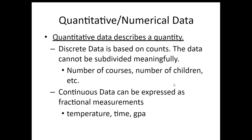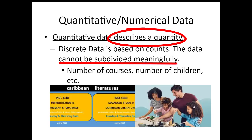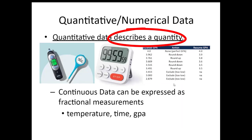There's nothing in between being present and absent — either you were there or not. Being pregnant or not pregnant, passing or failing a class — that is categorical or qualitative data. The other kind is quantitative data, or numerical data. Quantitative data describes an amount, the quantity. Discrete data is based on actual counts, so the data usually can't be subdivided in a meaningful way.